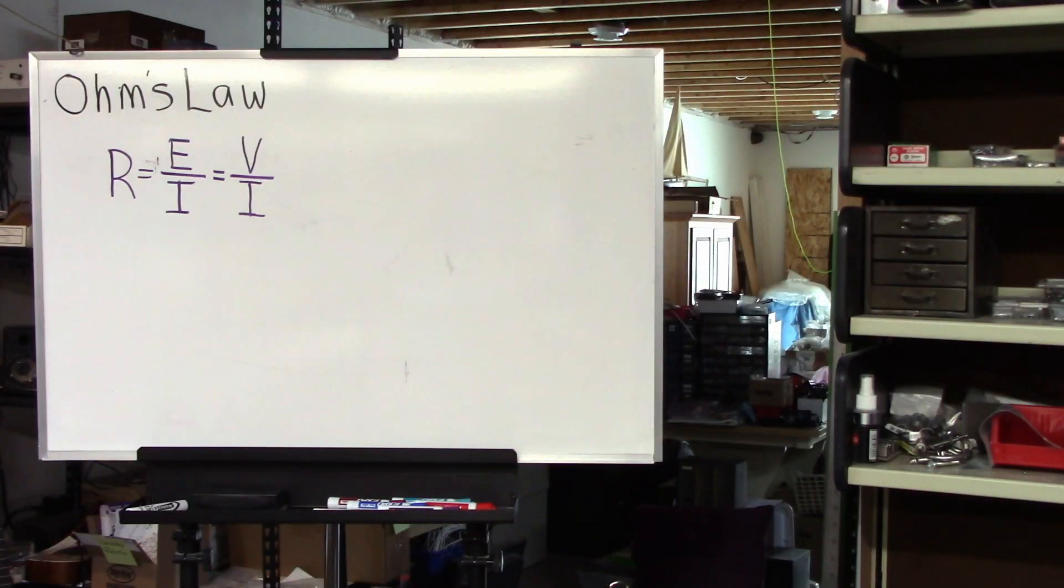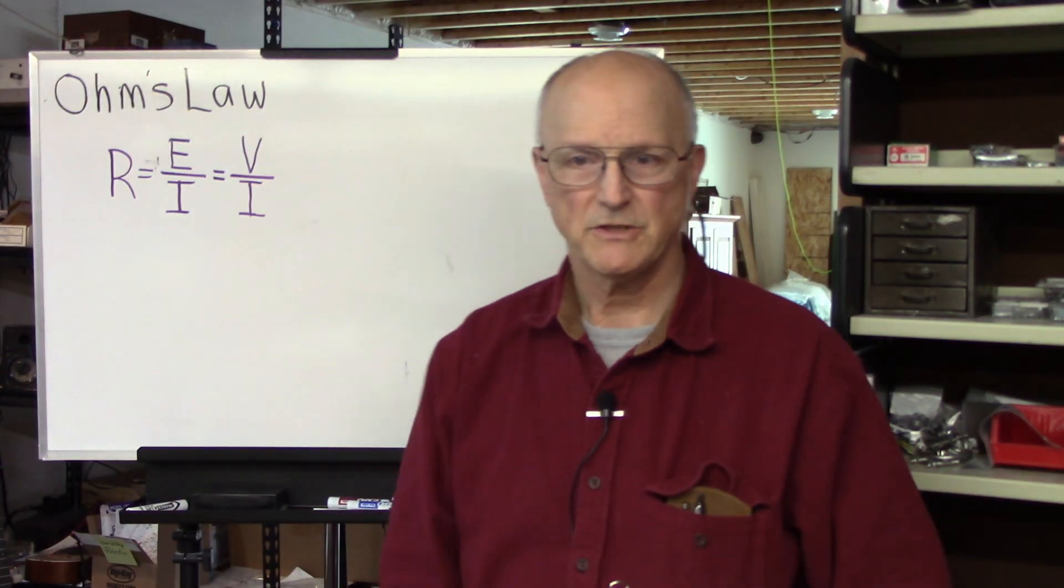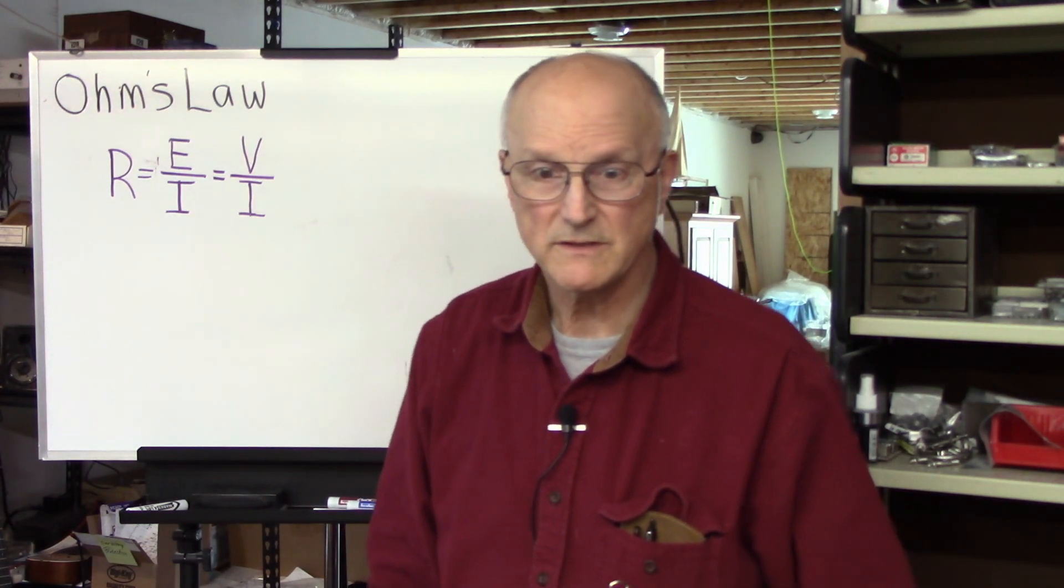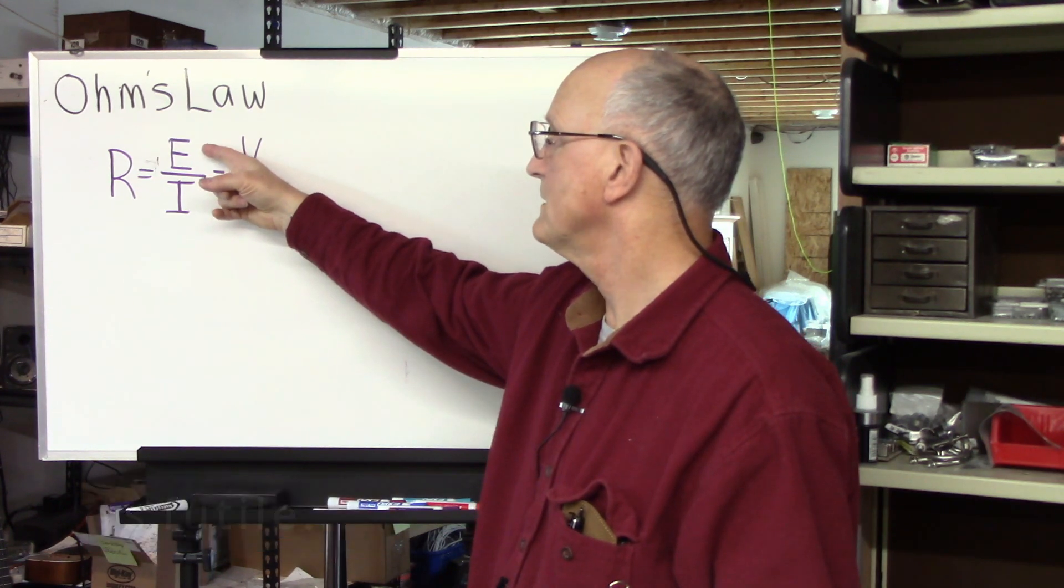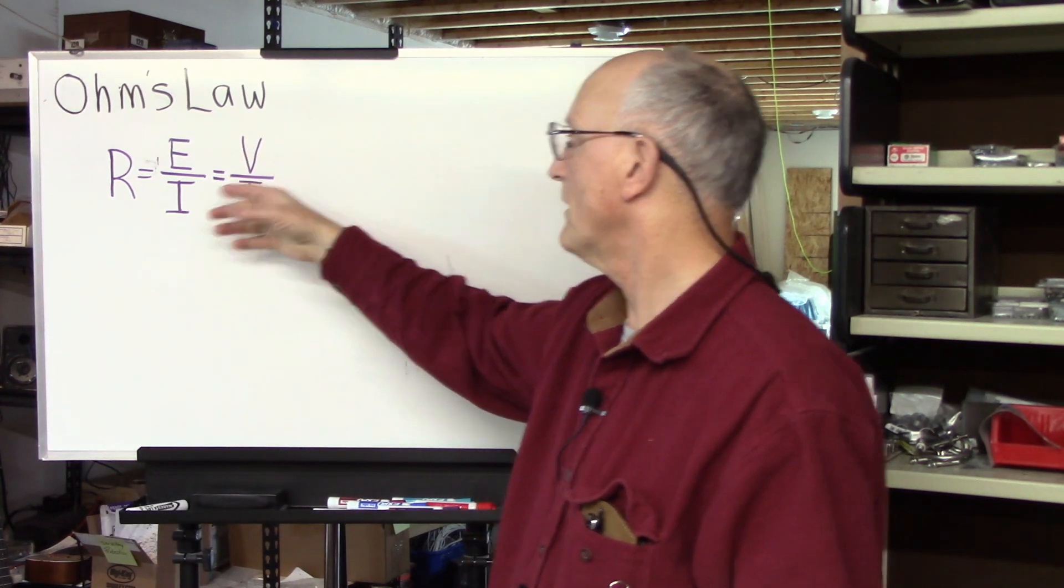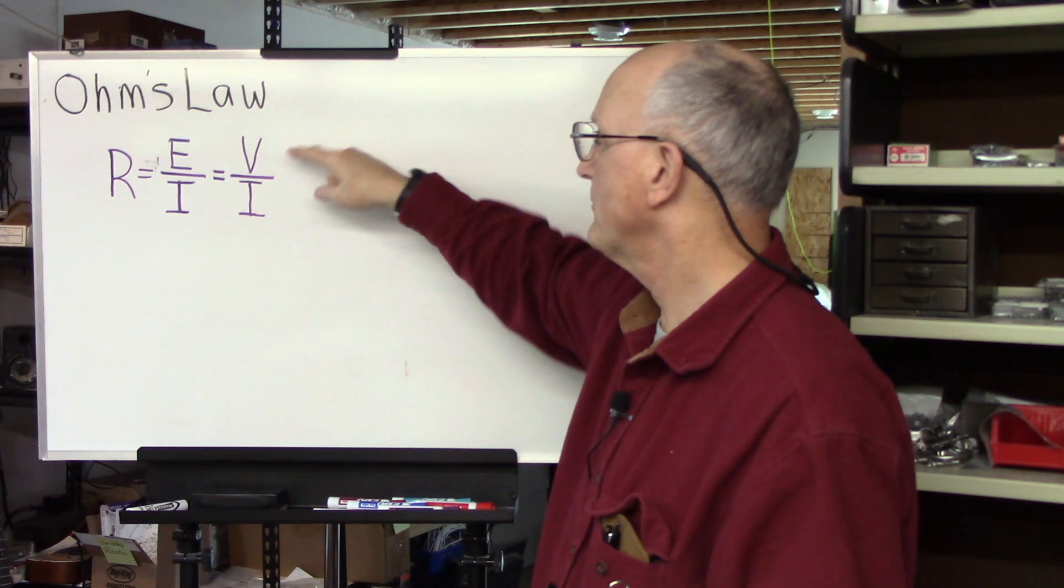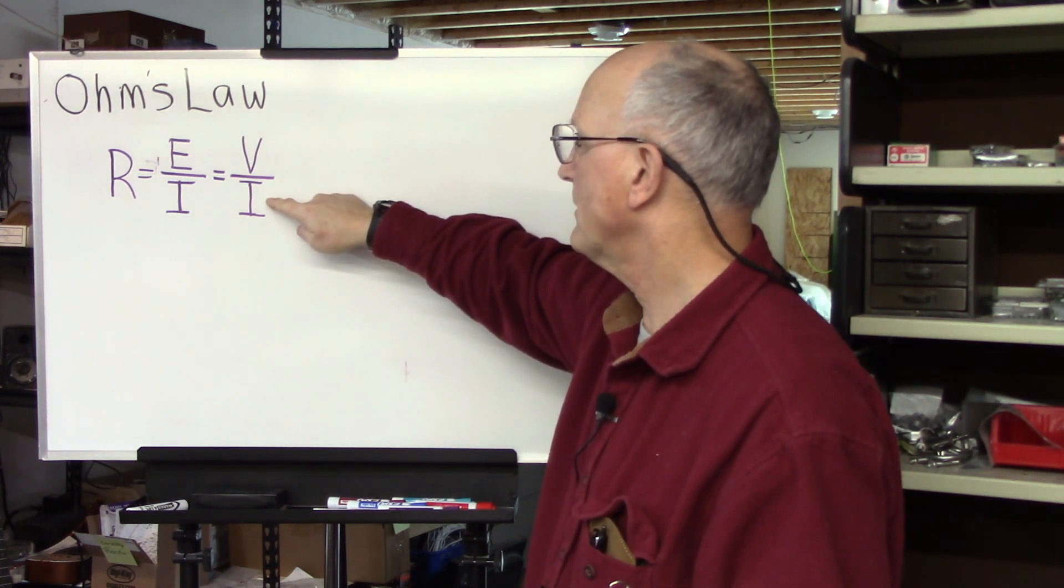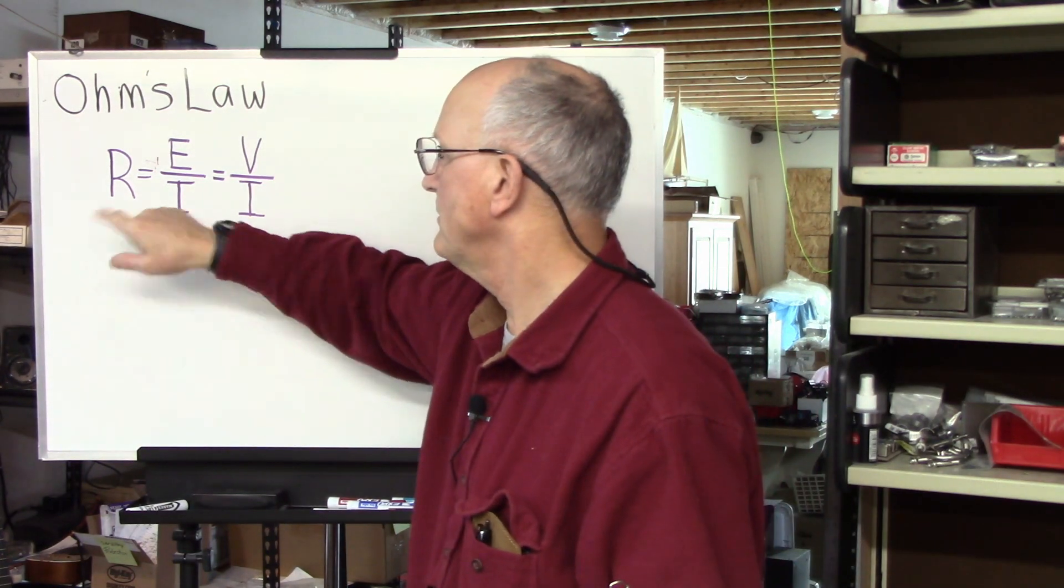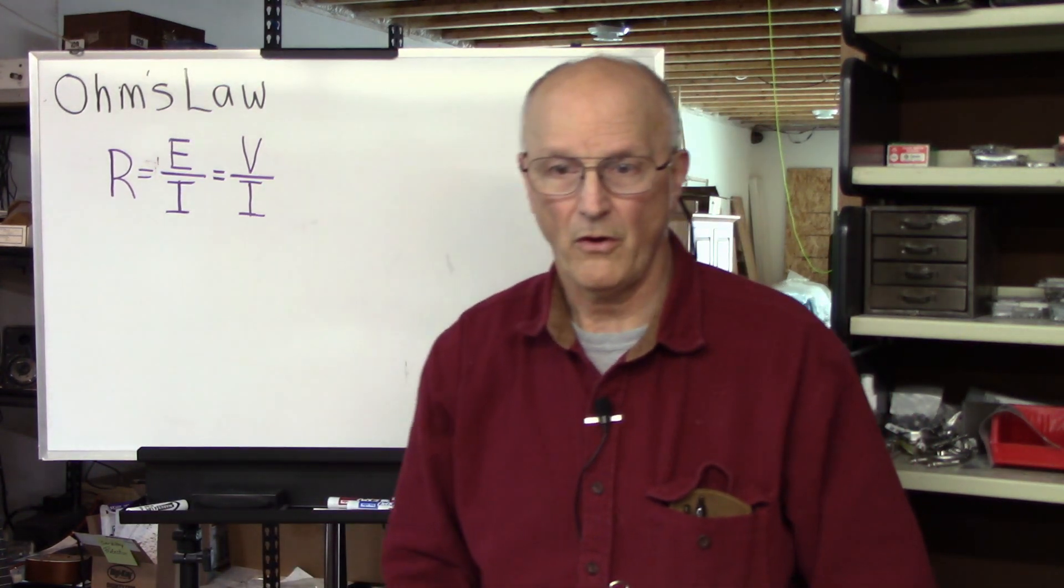Let's take a look at this on the whiteboard. Here is the relationship that Georg Ohm discovered. Resistance is equal to the electromotive force over the current, or in more modern terms, we talk about the voltage in volts divided by the current in amps is equal to the resistance in ohms.